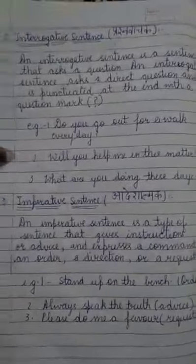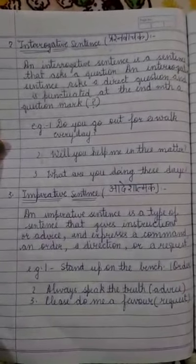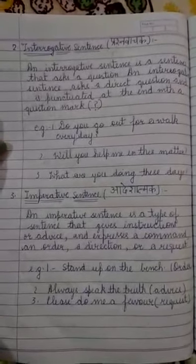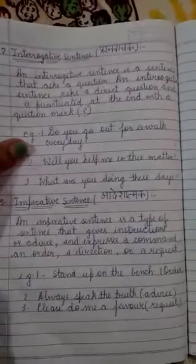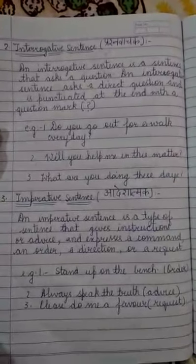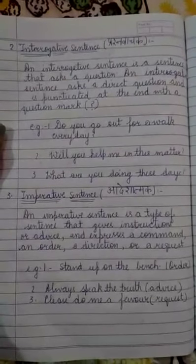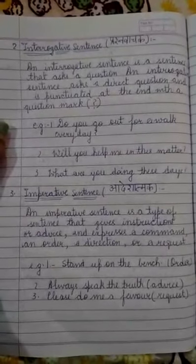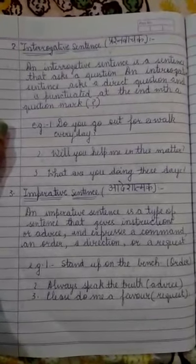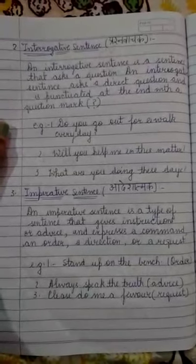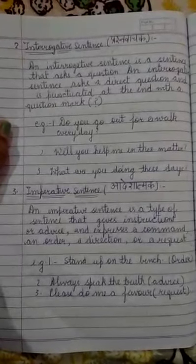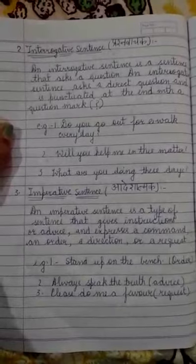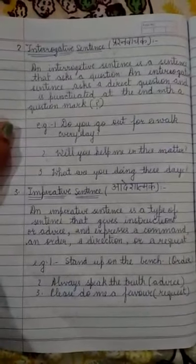Now we will discuss about interrogative sentences. An interrogative sentence is a sentence that asks a question — it usually asks a direct question. For example: 'Do you go out for a walk everyday?' — here we are asking a question. 'Will you help me in this matter?' — again, a direct question. 'What are you doing these days?' — again, asking a question. All these sentences end with a question mark.